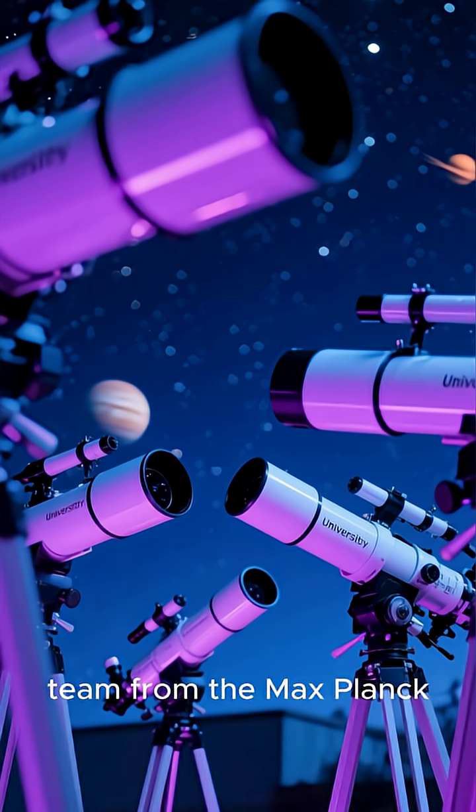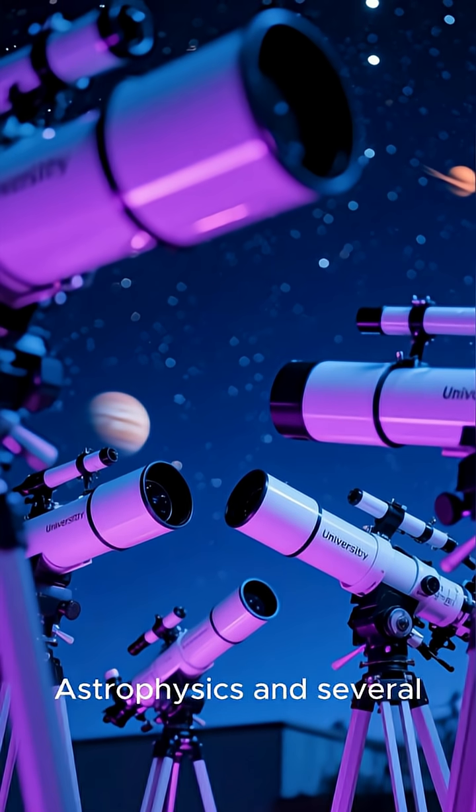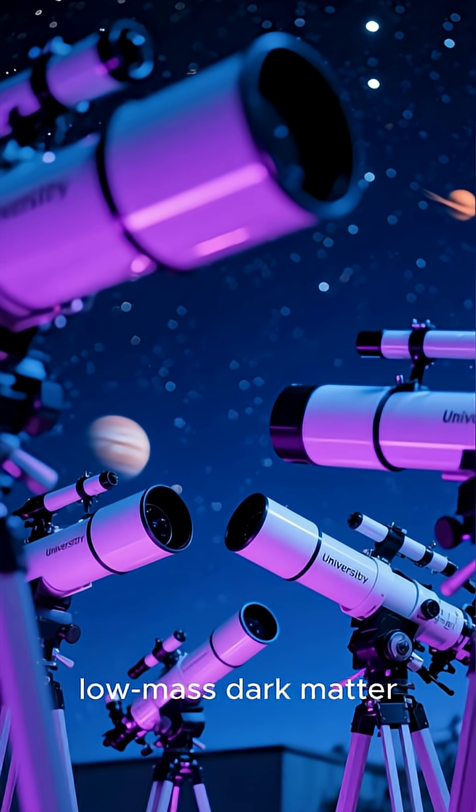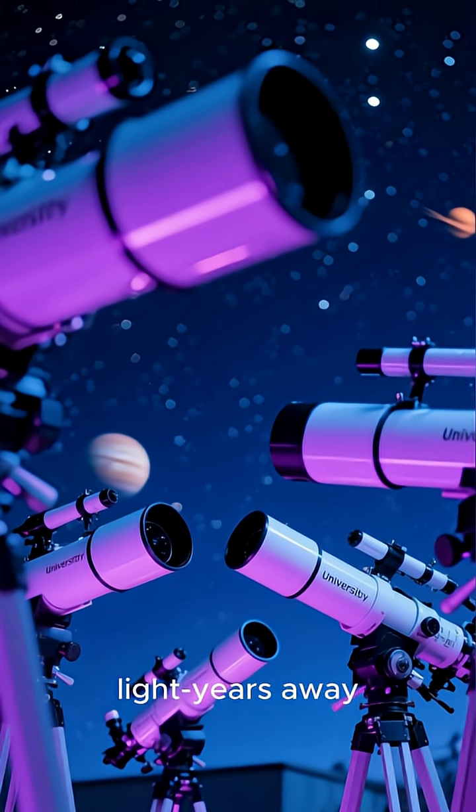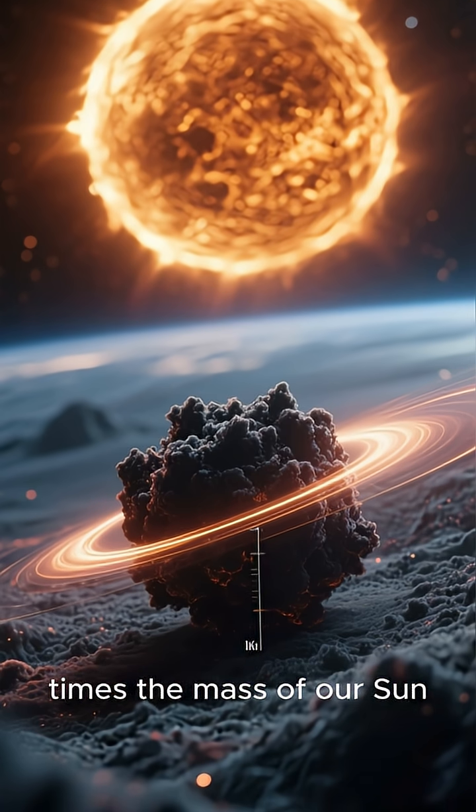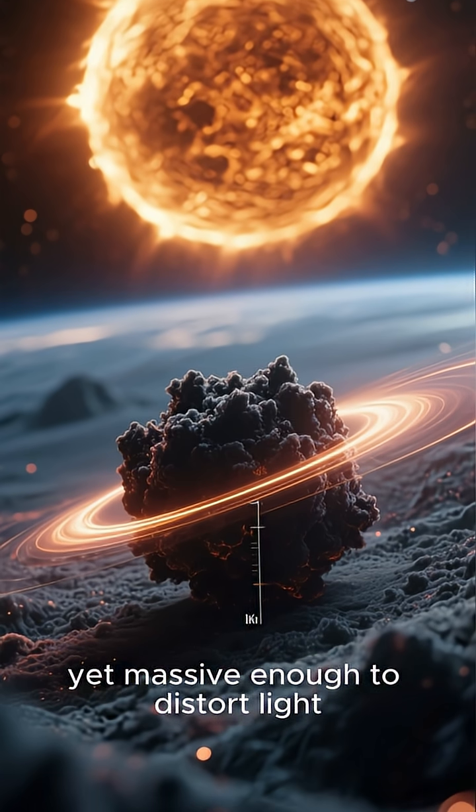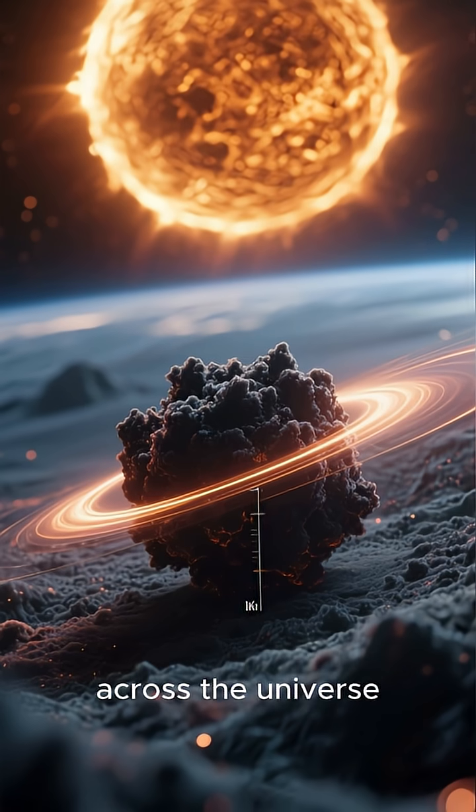An international team from the Max Planck Institute for Astrophysics and several universities has found a low-mass dark matter clump nearly 10 billion light-years away. It weighs about a million times the mass of our Sun, tiny on a cosmic scale, yet massive enough to distort light across the universe.